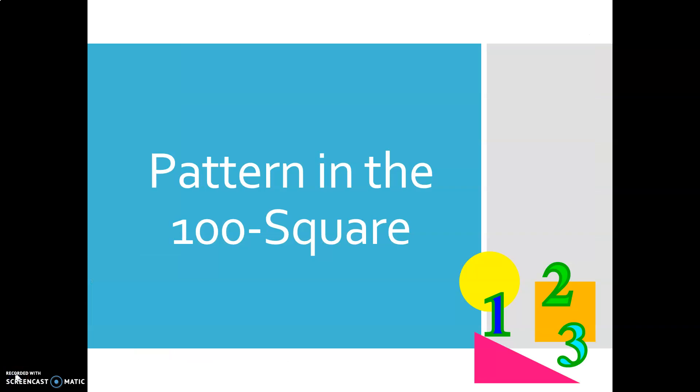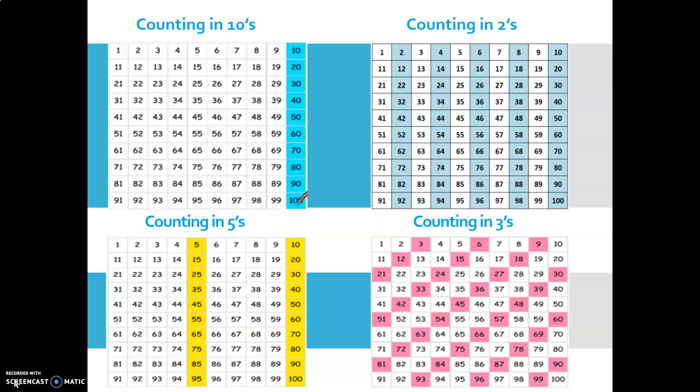Patterns in the 100 square. There are lots of patterns to be seen in the 100 square, and this will really aid you when you're learning your multiplication tables. If we look at counting in 10s or your 10 times tables, all along the last column on your 100 square is your 10 times tables. So 10, 20, 30 and so on.